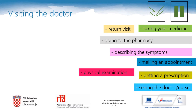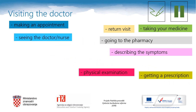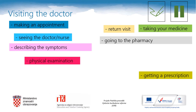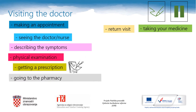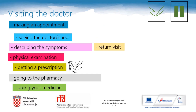What do you do first? That's right, you make an appointment. Pause the video lesson now and copy these sentences into your notebook in the correct order. Let's check your answers. The first thing is making an appointment, then seeing the doctor or a nurse, then describing the symptoms, after that physical examination, then getting a prescription, the next one is going to the pharmacy, taking your medicine, and the last one is a return visit. Well done.